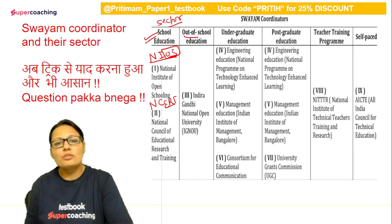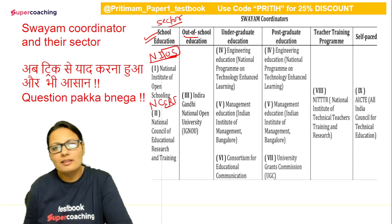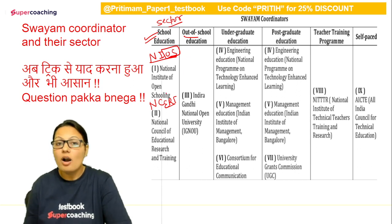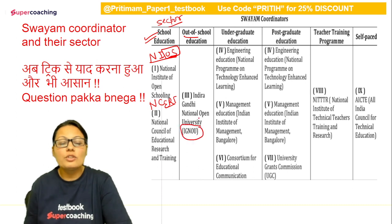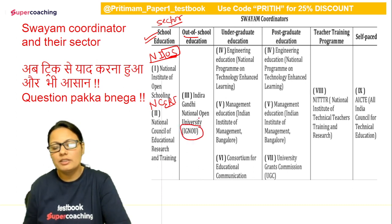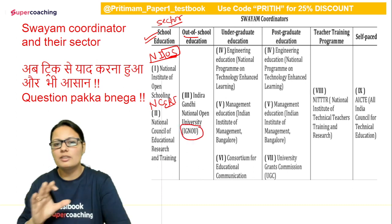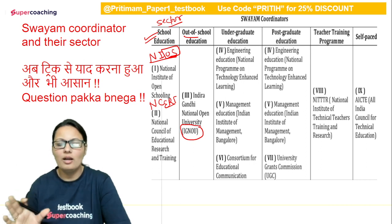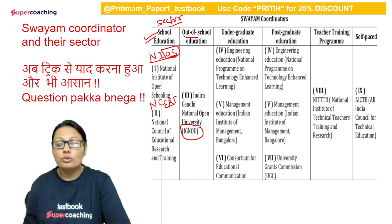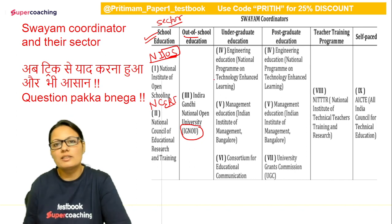अब बच्चा जैसे school से बाहर निकलता है, out of school आते ही उसको IGNU welcome करती है। IGNU — यानी Indira Gandhi National Open University — already आप लोग इससे aware हैं। Out of school के लिए IGNU है। तो मैं following में question भी दिखाऊंगी कि कैसे आता है।